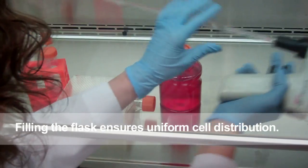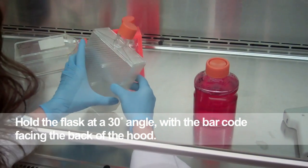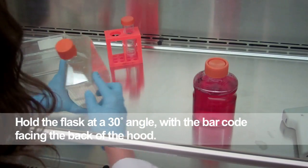Add your cell suspension, stir the solution, and then tilt the hyperflask vessel on its back corner at a 30 degree angle with the barcode facing the back of the hood.